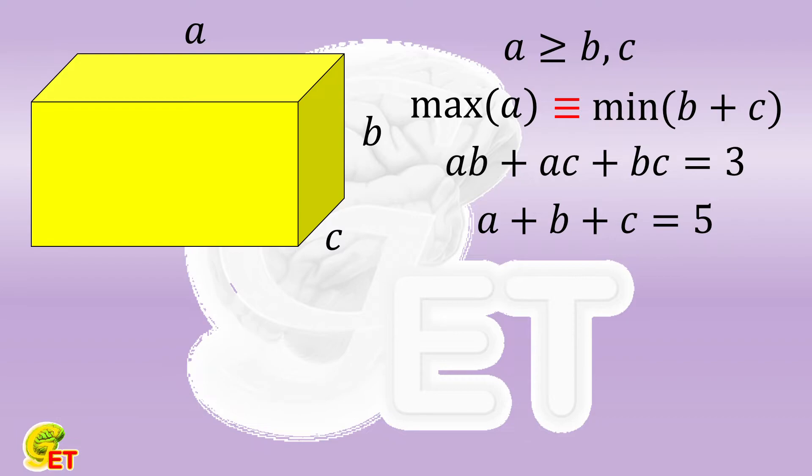Then, by integrating A equals 5 minus B plus C into the other equation, we can further reduce the number of variables. This gives the difference of 5 minus B plus C times B plus C plus B times C equals 3. To tidy it up a bit, the square of B plus C minus 5 times B plus C plus 3 minus B times C equals 0. There are only B plus C and B times C in this formula, which is perfect.